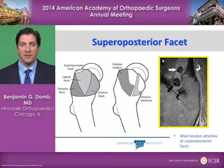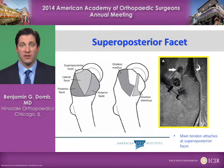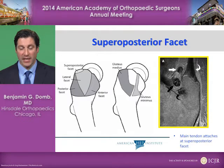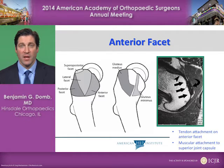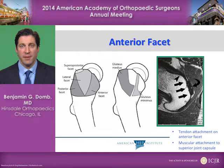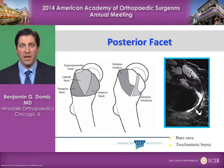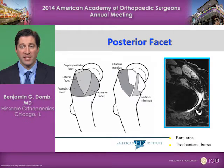It should also be noted that the tendinous portion of the gluteus medius is on the deep side of the muscle belly. The superior posterior facet insertion is a much thicker, stouter portion of the gluteus medius tendon, and therefore probably less commonly involved in tears or pathologic findings. The anterior facet, seen best on axial views, is the insertion of the gluteus minimus. The posterior facet is a bare area where there is only trochanteric bursa.